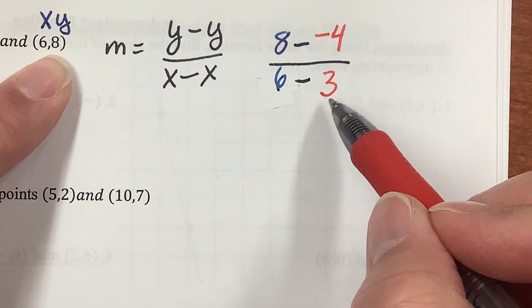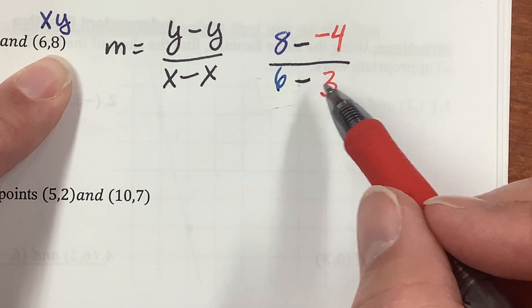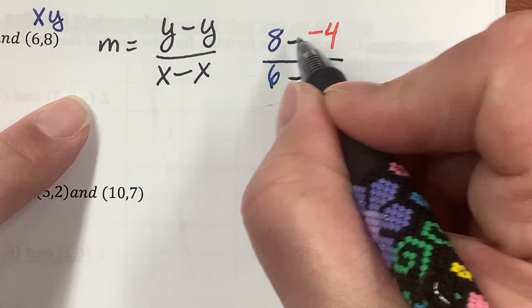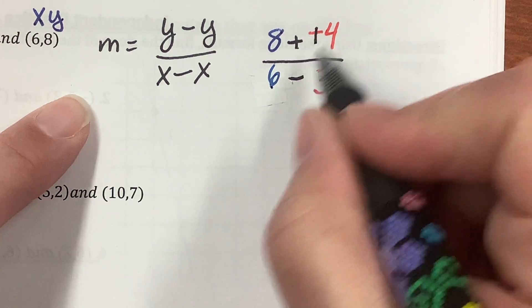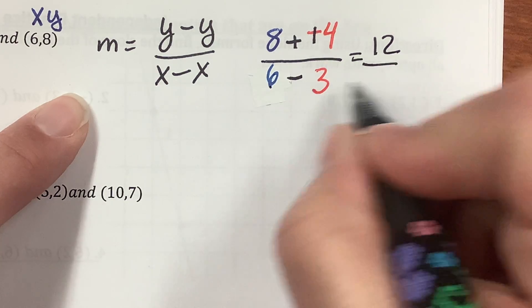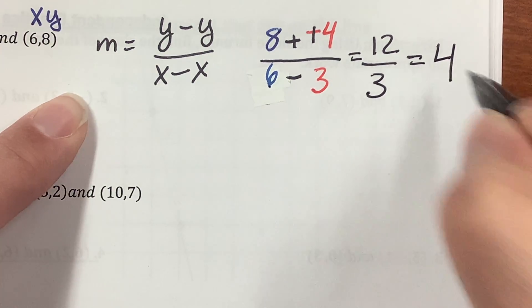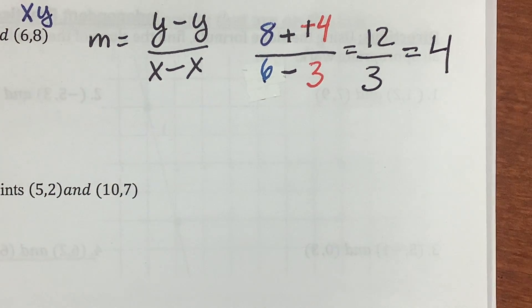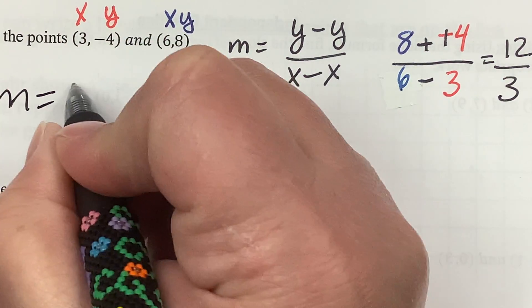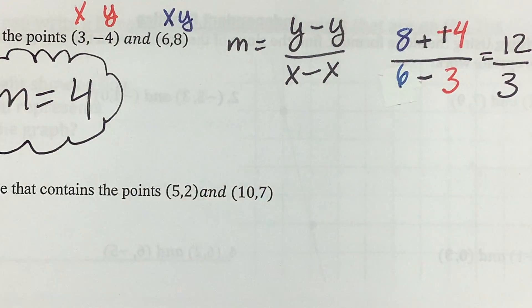So, I have my x and y first over my x and y. x on the bottom, y on the top. x on the bottom, y on the top. So, y minus y over x minus x. Let's see. Keep change, change. So, I have 8 plus 4. Which is 12 over 6 minus 3, which is 3. Oh, I can reduce that and get just 4. So, I know my slope is 4. Slope m equals 4. And a puffy cloud of happiness around that.